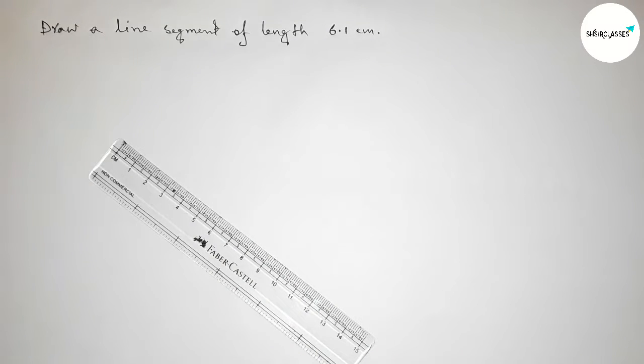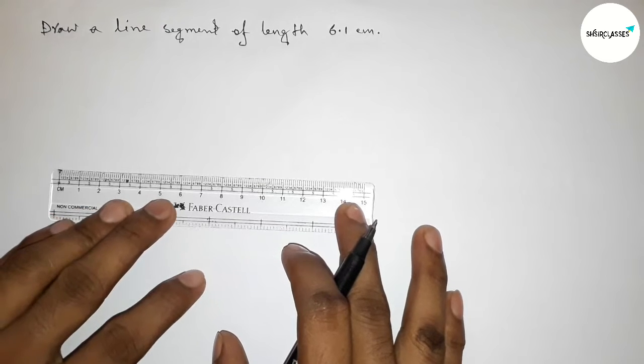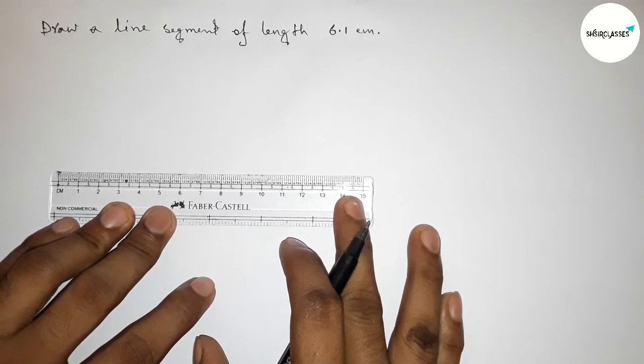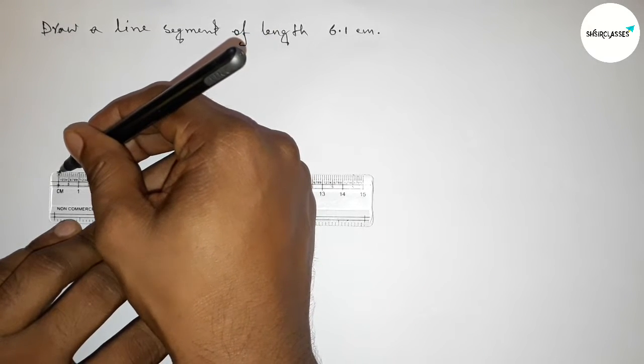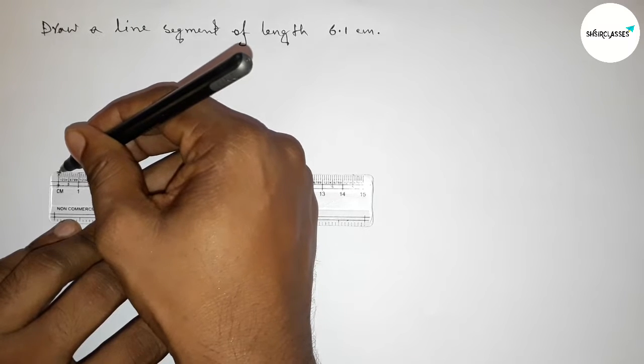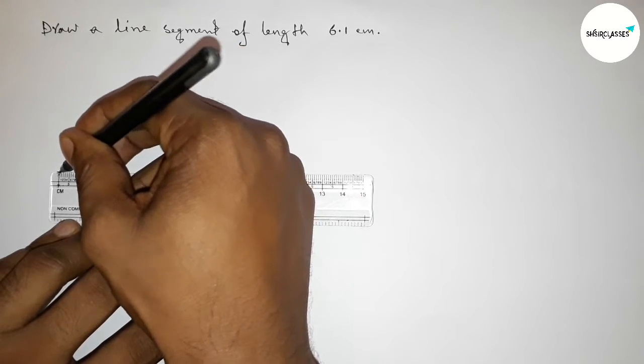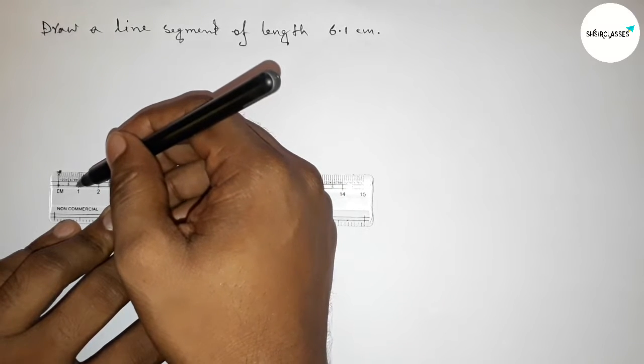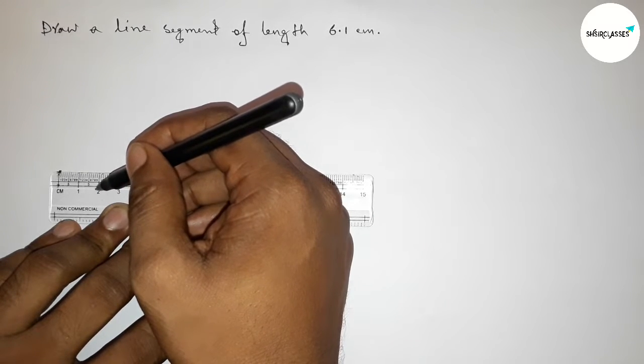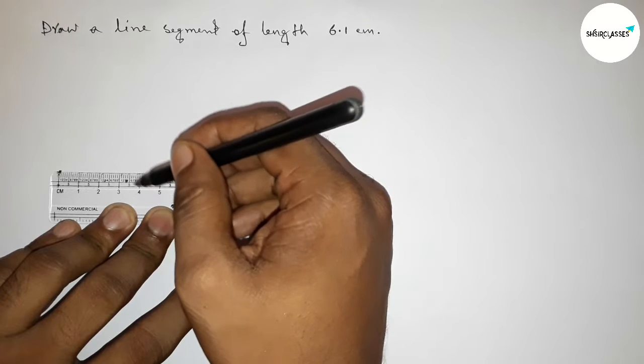First, putting the scale here. Now we have to measure the length 6.1 centimeters. This is starting at zero, so first marking here at zero. Now counting: this is 1 centimeter, 2 centimeters, 3 centimeters...